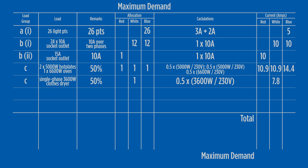At this point, we introduce load group D, which covers air conditioning units. The air conditioner here is a sizeable single-phase unit and is allocated 75% of the connected load, giving a calculated load of 13 amps in the red phase.